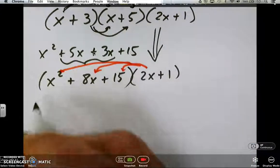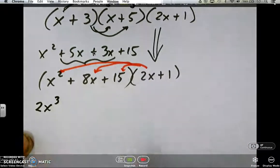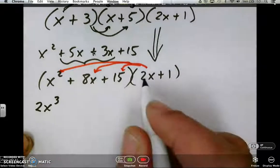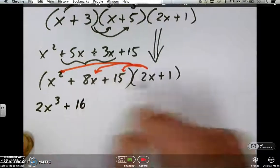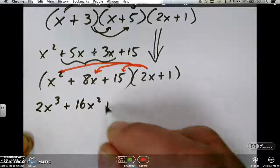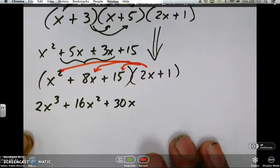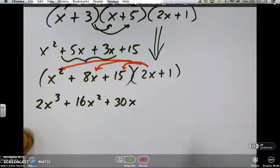So 2x times x squared, that's 2, and x times x squared, x to the third. We have three x's. 2 times 8, 16, x times x, x squared. 2 times 15 is 30, and it had an x. Okay, so there we are with that.